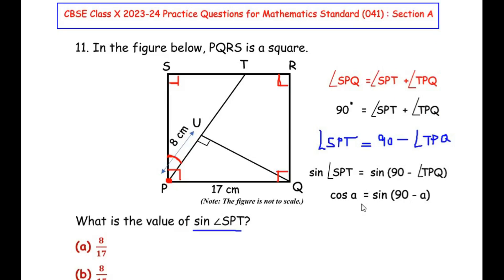That means I can write sine of angle SPT is equal to, now in place of sine 90 minus angle TPQ, I will write it as cos of angle TPQ by using complementary angles. So let me write here cos of angle TPQ.